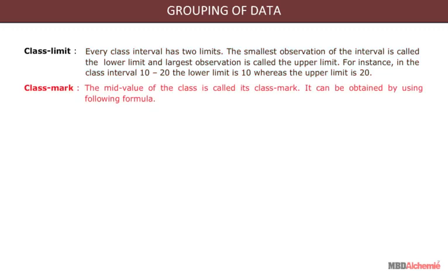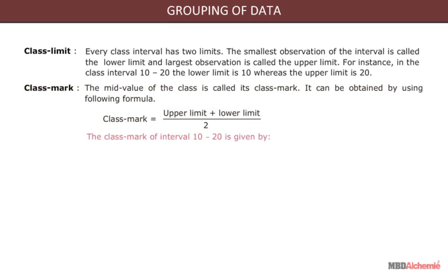Class mark: The mid-value of the class is called its class mark. It can be obtained by using the following formula: class mark is equal to upper limit plus lower limit divided by 2. For example, the class mark of interval 10 to 20 is given by 20 plus 10 divided by 2, which is equal to 15.